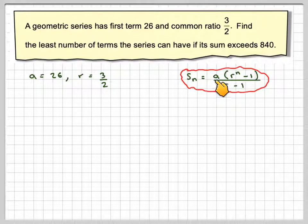And we know that Sn will be equal to A times R to the n minus 1 over R minus 1. So this is the sum of the first n terms of a geometric series.